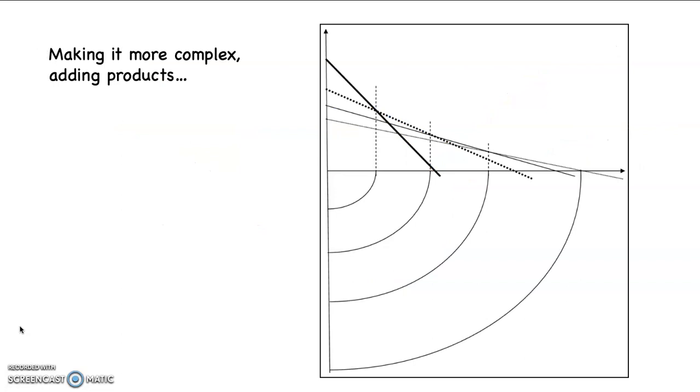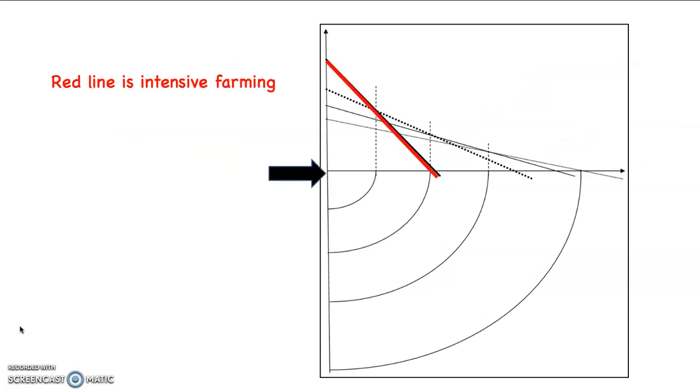So let's make it a little more complex adding products. First of all, the red line that I just highlighted is intensive farming. So it can be profitable the entire way, all the way from the left to the right where it hits that horizontal line. The black arrow is pointing out where the market is. However, when we add in the blue line, which is the forest products, notice that they're going to cross the red line and the blue line where the bronze arrow is at. From that point on, what's going to happen is as you increase distance, the forest products are going to dominate.